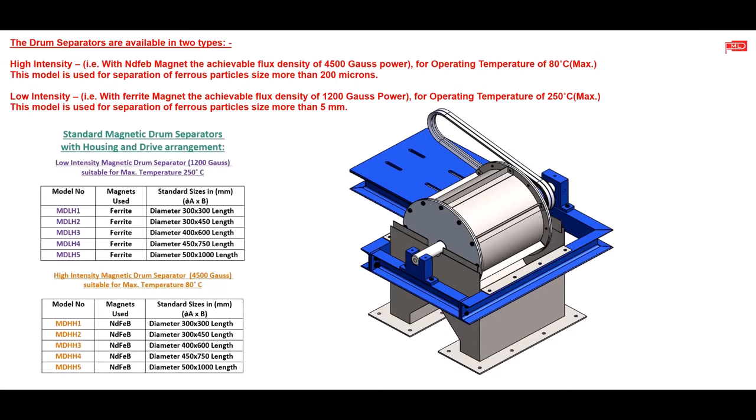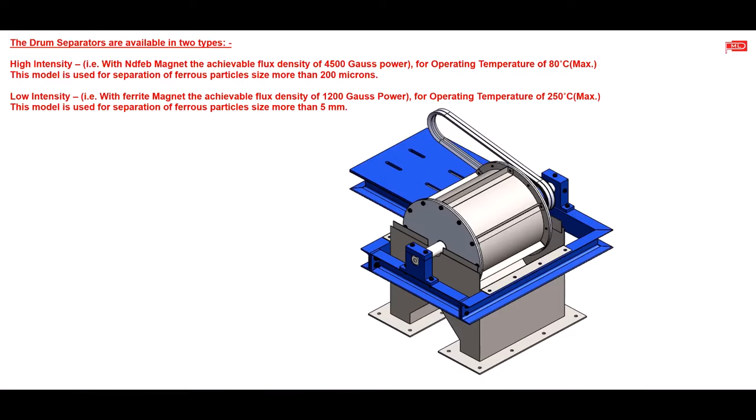Low-intensity, i.e. with ferrite magnet, the achievable flux density of 1200 Gauss power for operating temperature of 250 degrees Celsius. This model is used for separation of ferrous particles size more than 5 mm.